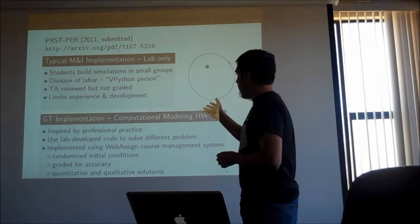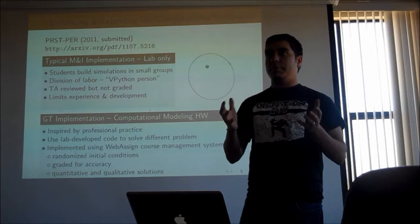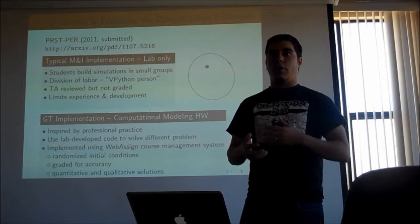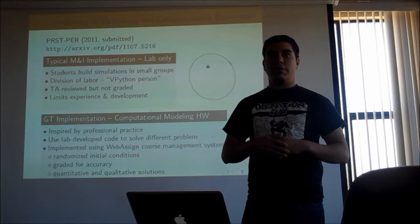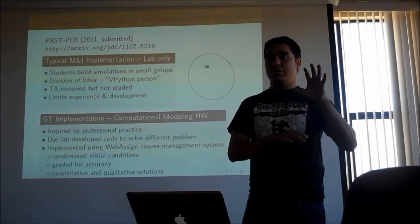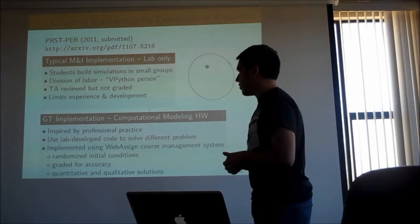These computational modeling homeworks are inspired by the way professional computational scientists work — they write code that solves a problem, then go back and alter it to solve a different problem or add to the model. That's exactly what we do with students: they write code in the laboratory then take it out and make changes, ranging from simply changing initial conditions to fundamentally changing the model. These problems are graded for accuracy using the web-assigned homework system, which gives all the nice randomization features of computer-based homework.